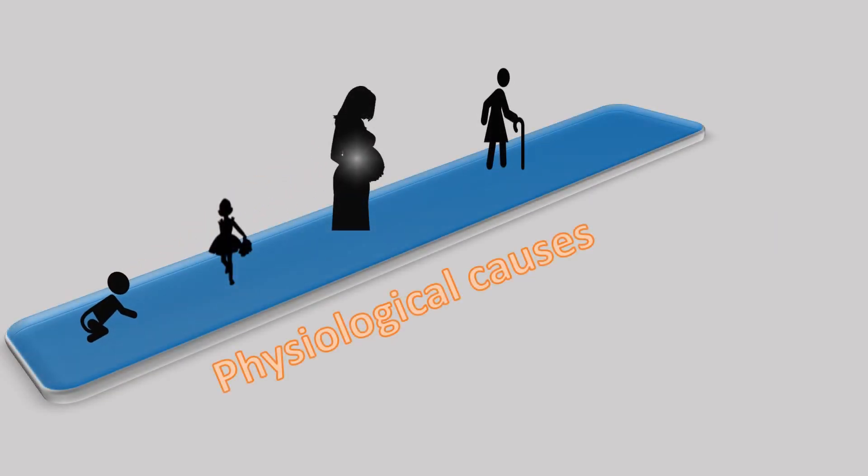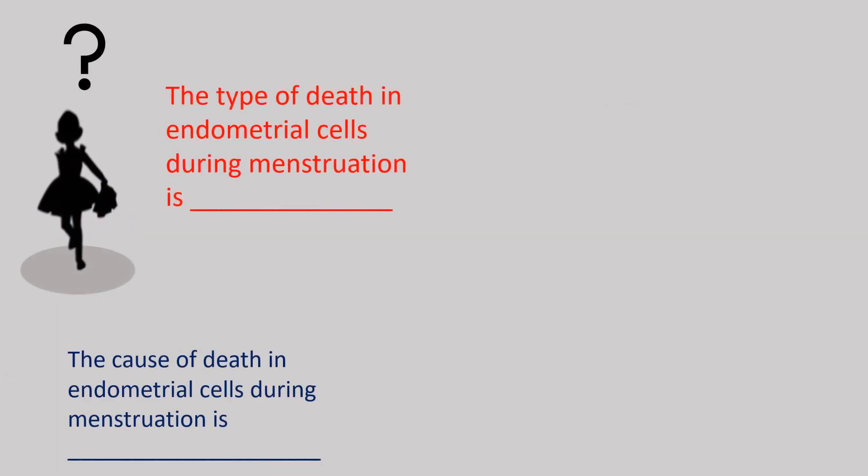The next three graphics are examples of apoptosis due to hormonal withdrawal. Let's see them individually. What is the type of cell death in endometrial cells during menstruation, and what is the cause of this cell death?